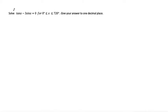Alright, here we have this problem of solving tan x minus 3 sine x equals 0 for x's between 0 and 720 degrees, and we want to give our answer to one decimal place.